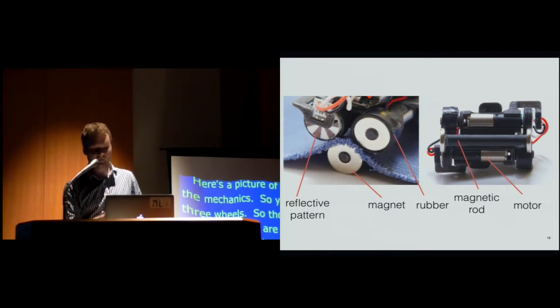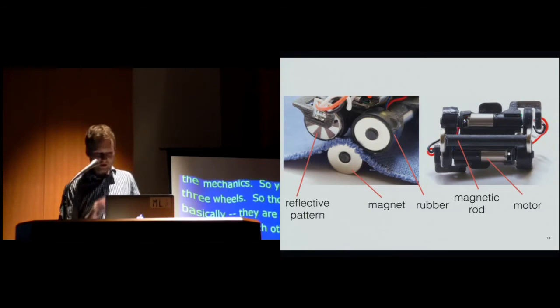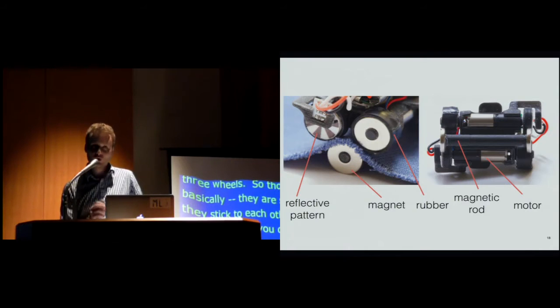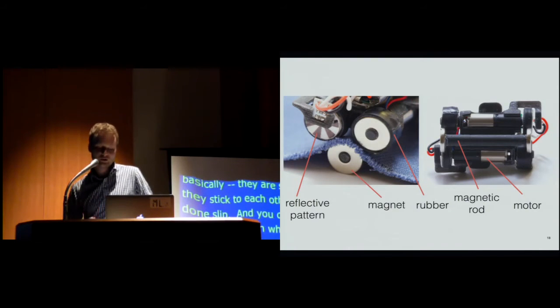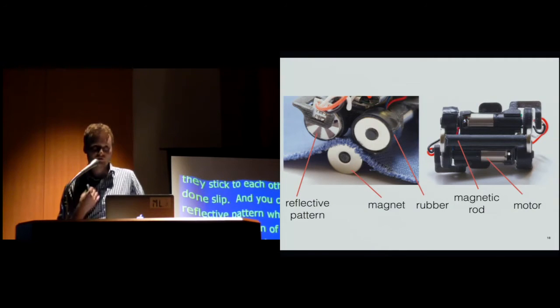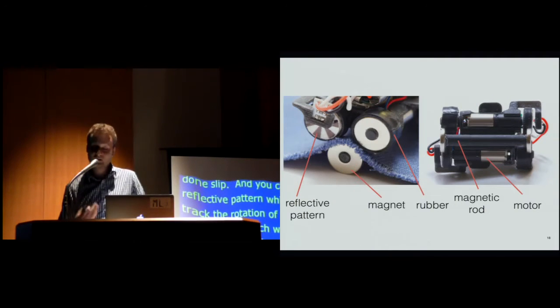And you can see on the wheel, there's a reflective pattern which allows to track the rotation of the wheels for localization, which we'll show you in a little bit. And also, on the other picture, on the back of the robot, you can see there's two motors.